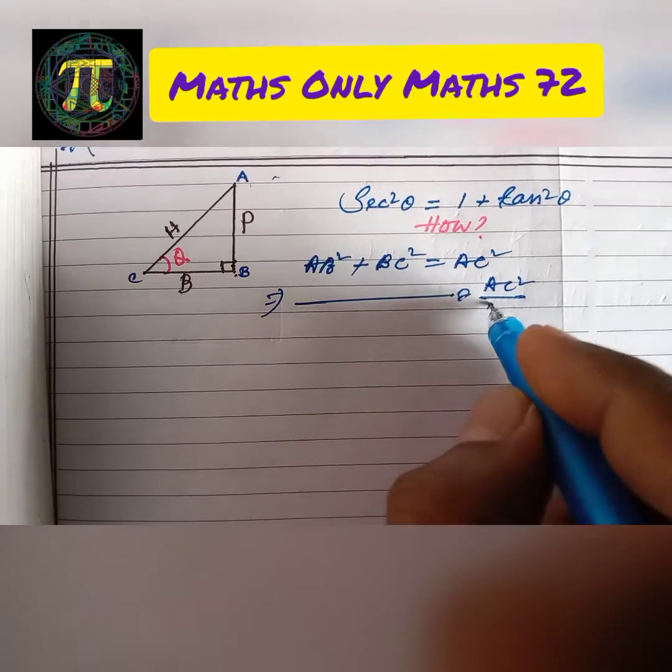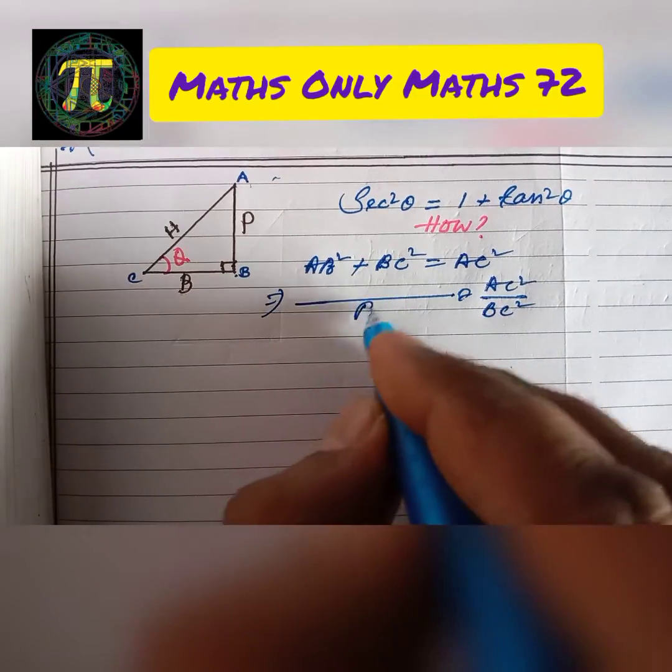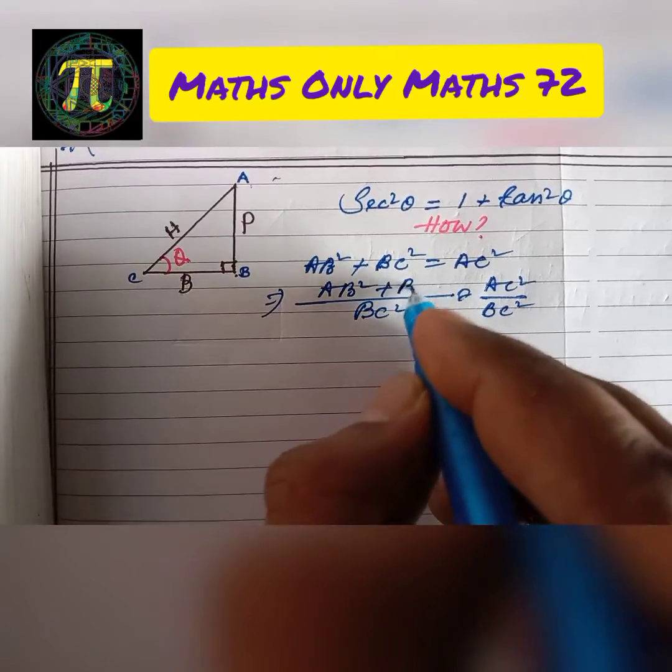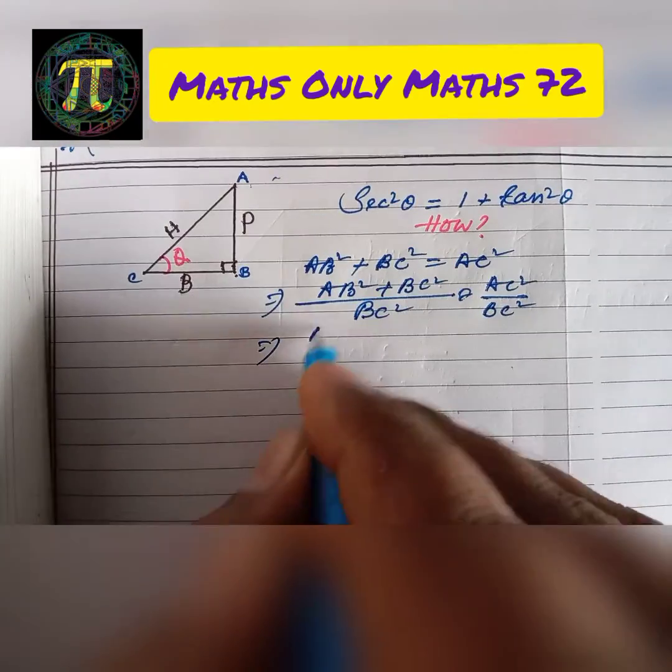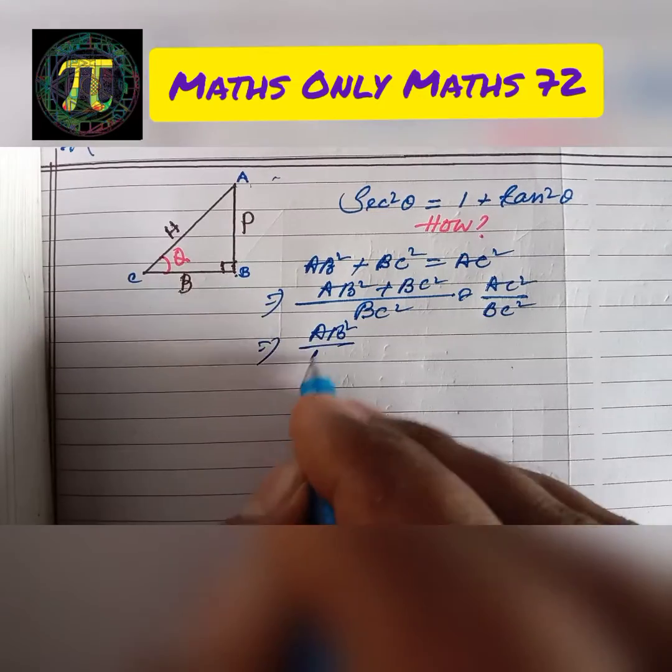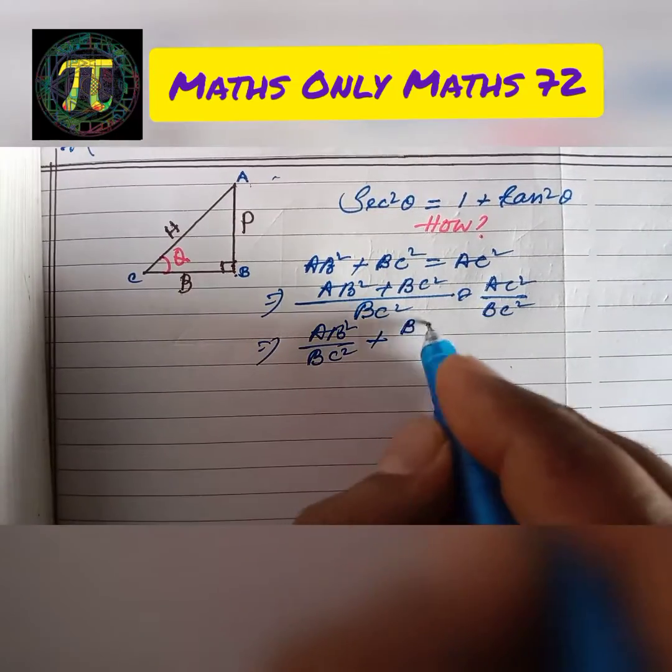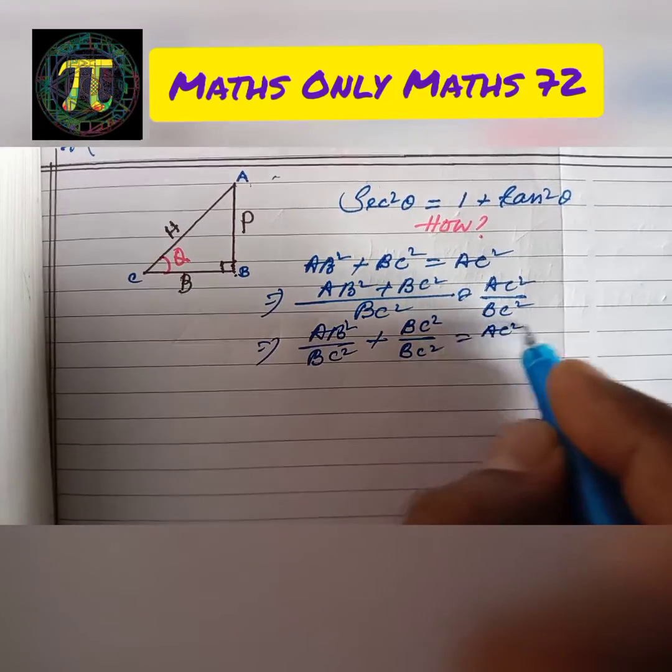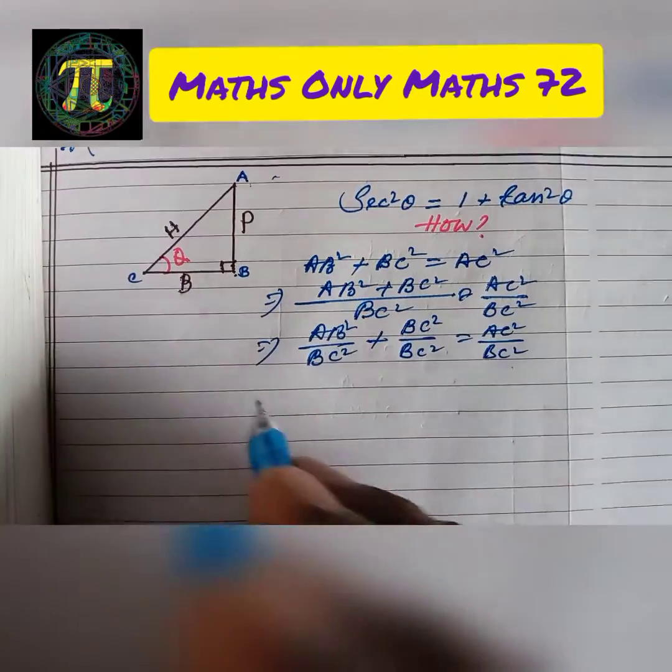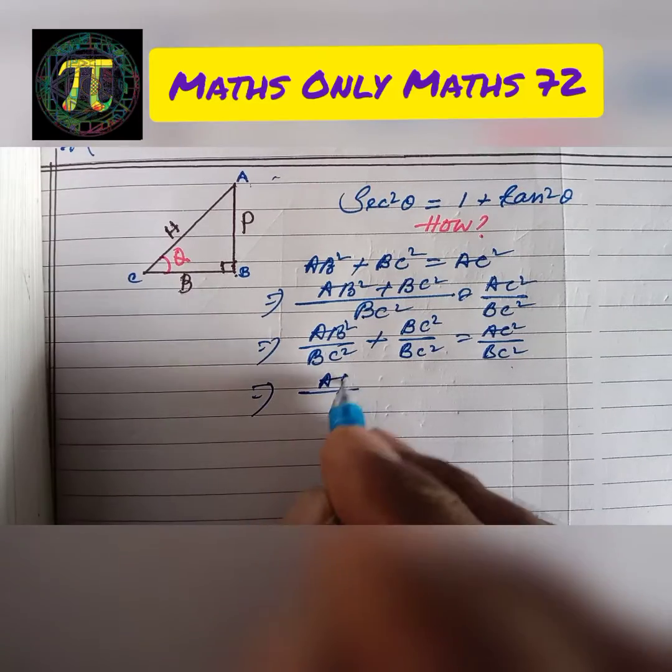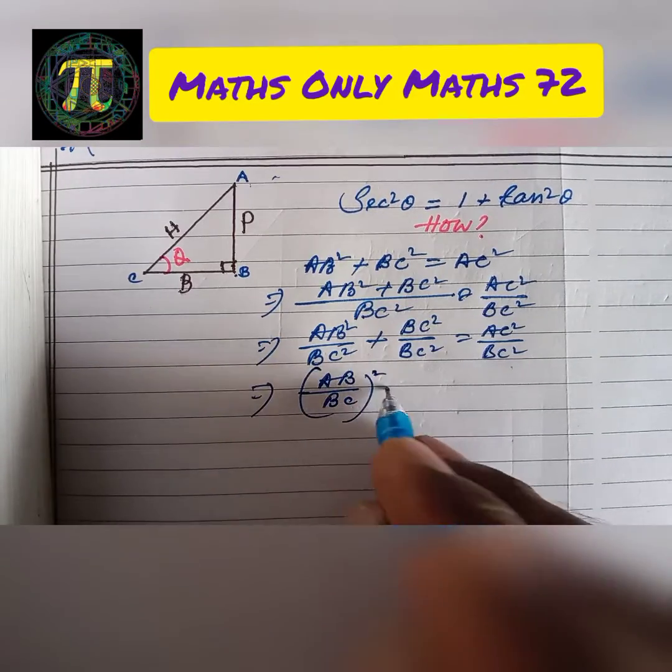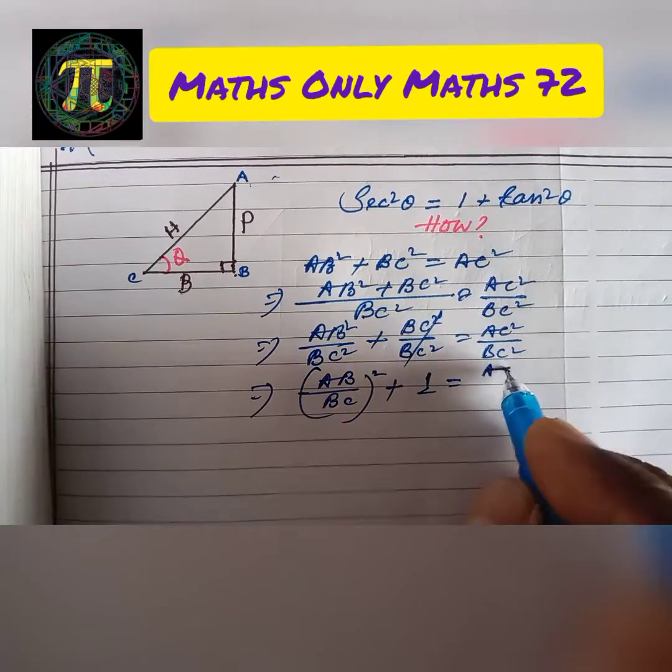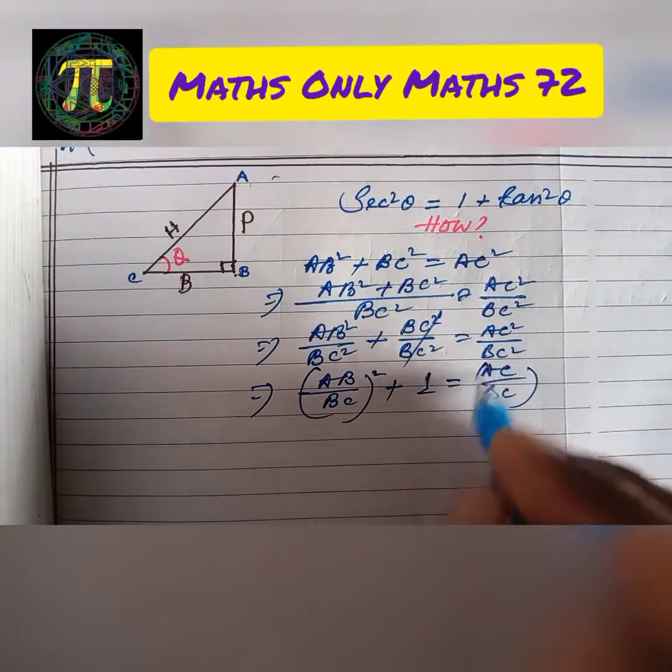We divide both sides by BC squared. So we get AB squared by BC squared plus BC squared by BC squared equals AC squared by BC squared. We can write this as AB by BC whole squared plus 1 equals AC by BC whole squared.